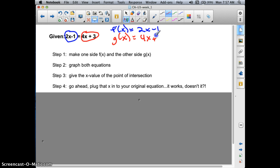Remember, f of x and g of x just mean y. So the first one is y equals 2x minus 1, and the red one is y equals 4x plus 3. The next step is to graph both of the equations and then give the x value of the point of intersection.